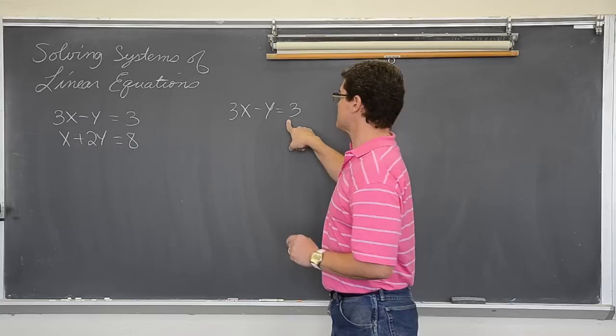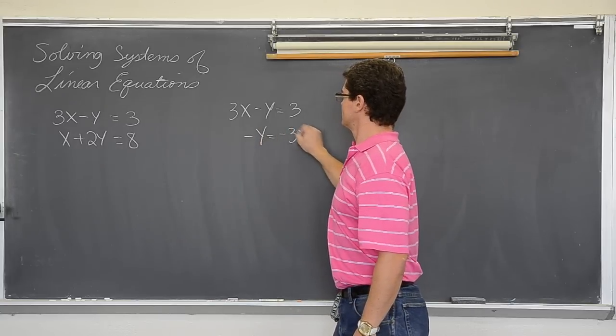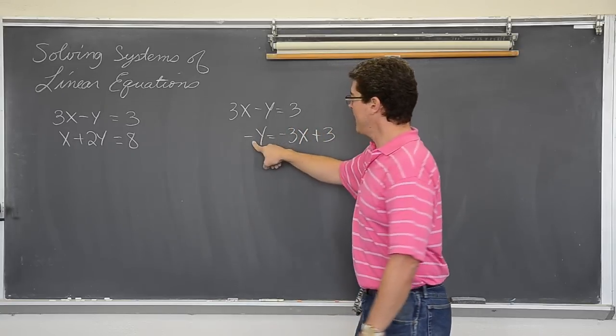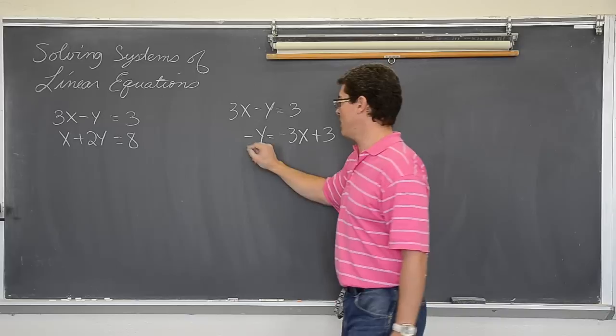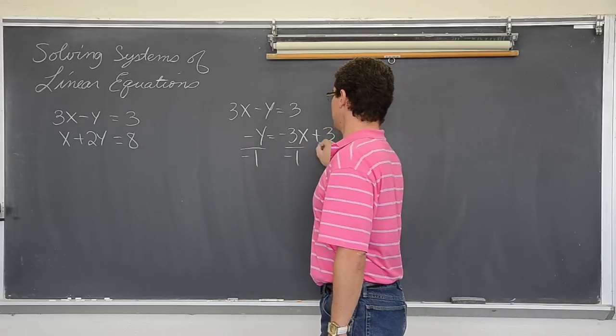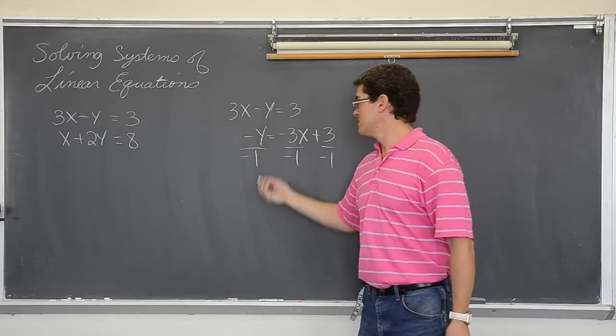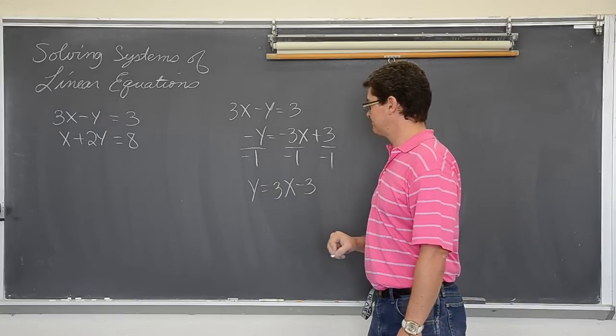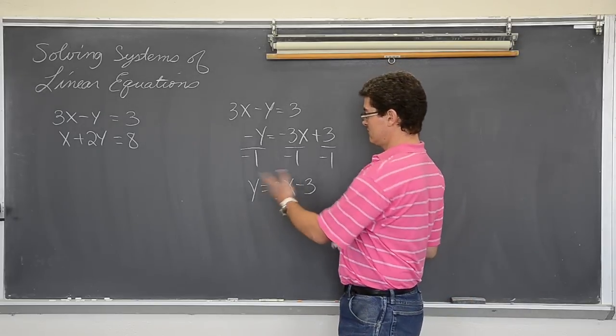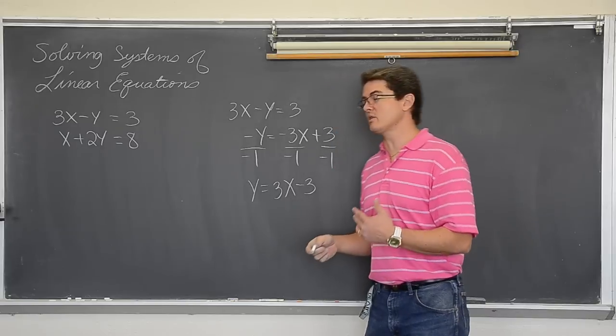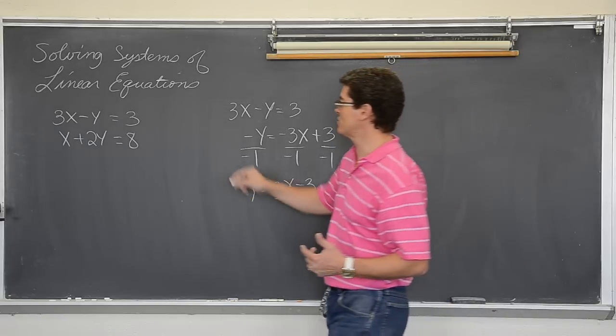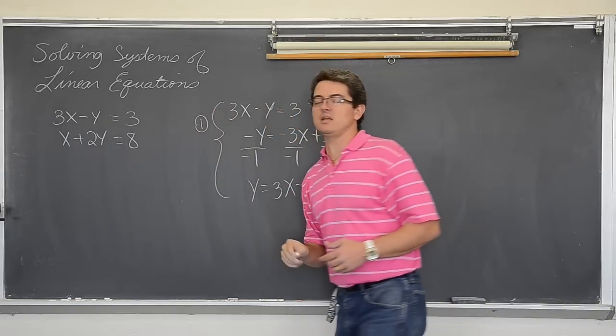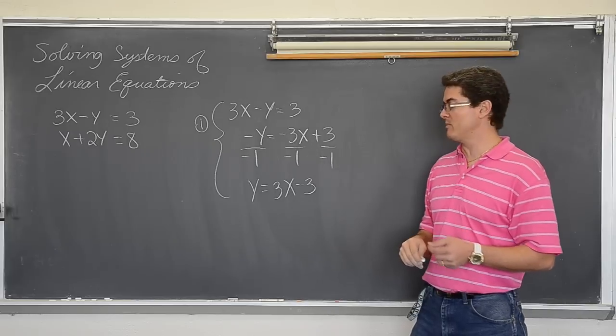So 3x minus y equals 3 and I am going to get this equation solved for the term with the leading coefficient of one. I am going to subtract both sides by 3x and then get rid of the negative one in front of the y by dividing everything by negative one. So y equals 3x minus 3. That doesn't really tell me an answer because that is only the first step of doing substitution.